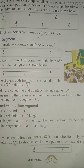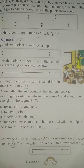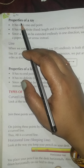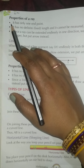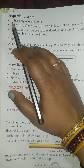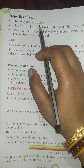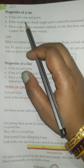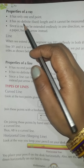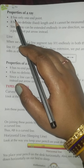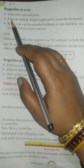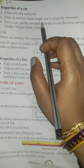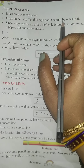Now let us go to the properties of Ray. Here it is given: properties of Ray. First point — it has only one end point. But a line segment has two end points, and a Ray has only one end point. Number two — it has no definite or fixed length, and it cannot be measured.